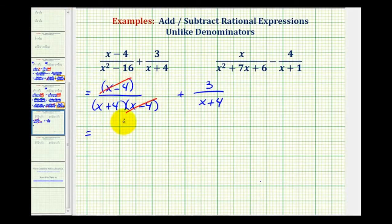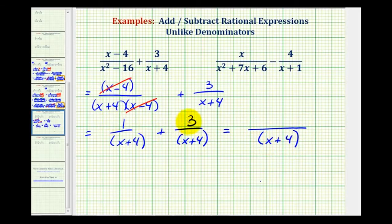So now we just have one over a factor of x plus four plus three over a factor of x plus four. So we kind of lucked out here because when this fraction simplified, it gave us a common denominator. So now we can add these two fractions by keeping the denominator the same and adding the numerator. And since one plus three is equal to four,